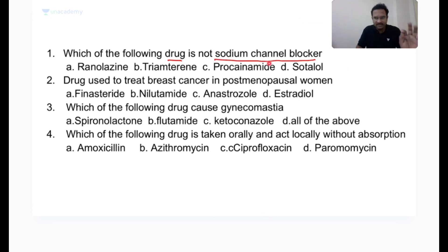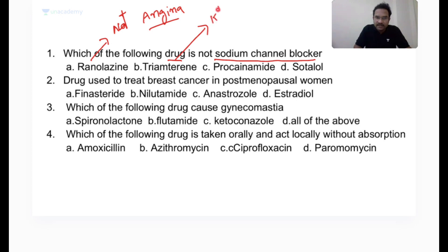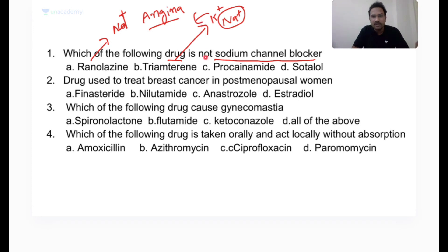Ranolazine is a sodium channel blocker used to treat angina pectoris at the heart. Triamterene is a diuretic — in fact a potassium-sparing diuretic. Triamterene and amiloride act at the renal collecting duct and are sodium channel blockers at that tissue, making them potassium-sparing diuretics.